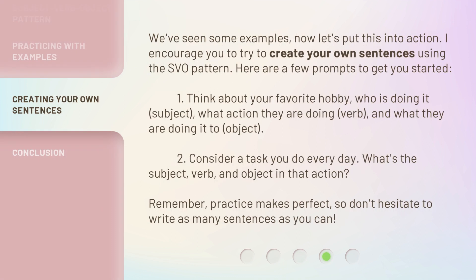We've seen some examples — now let's put this into action. I encourage you to try to create your own sentences using the SVO pattern. Here are a few prompts to get you started. 1. Think about your favorite hobby: who is doing it (subject), what action they are doing (verb), and what they are doing it to (object).